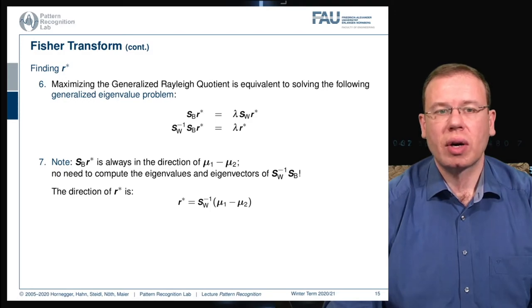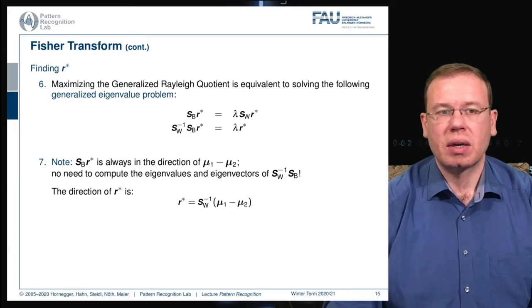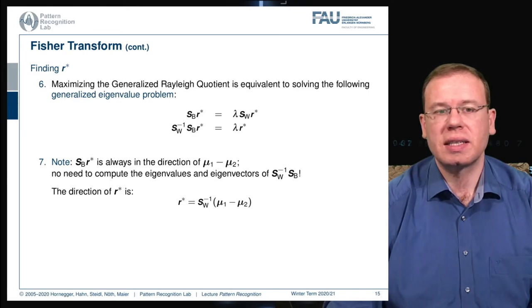Now we can solve for only one matrix. We take the inverse of S_W and multiply it from the left-hand side, and we essentially come up with this matrix that is S_W inverse times S_B. In this two-class problem, the projection of R* times S_B is always in the direction of the two means as we have already seen in previous videos. There's actually no need to compute the eigenvalues and eigenvectors of the matrix in this case because we can simply compute the direction as the difference between the two means normalized with the inverse of the within scatter matrix, which gives us R*.